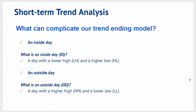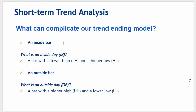So what is an inside bar? It is a bar with a lower high but a higher low — the current bar we are examining is within the range of the previous bar: lower high, higher low. What is an outside bar? An outside bar is where we have a higher high and a lower low, meaning the range of that bar engulfs the range of the previous bar. An inside bar is called that because its range is within the range of the previous bar, and an outside bar is called that because its range is outside of the previous bar's range.